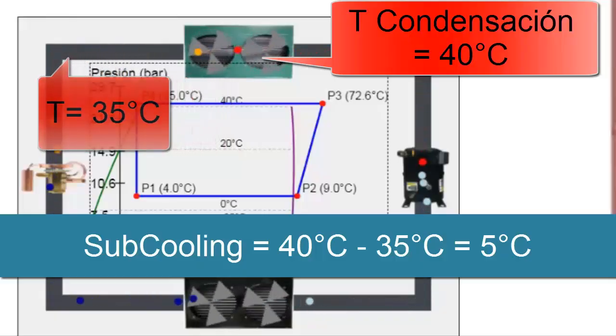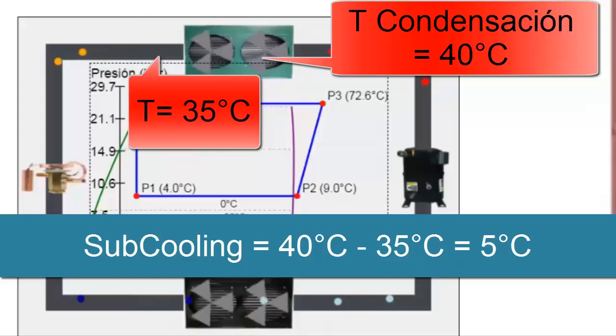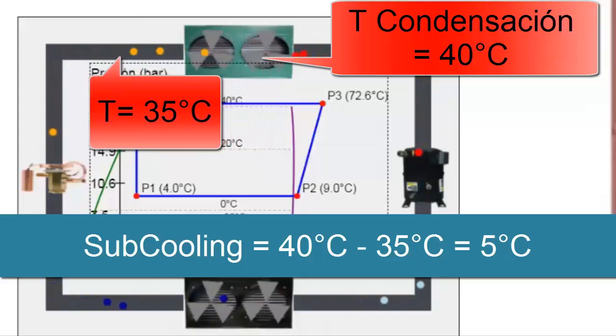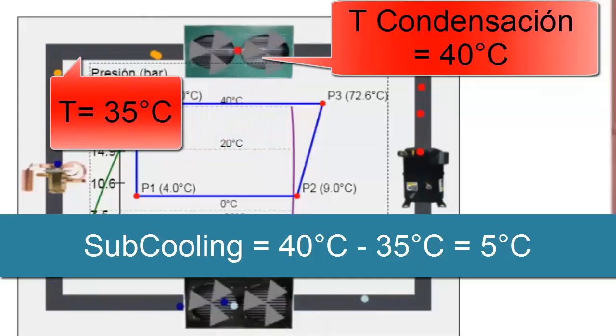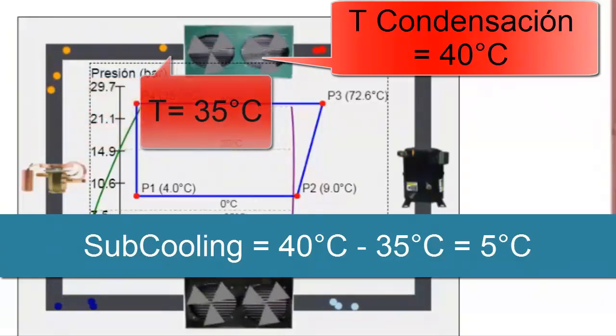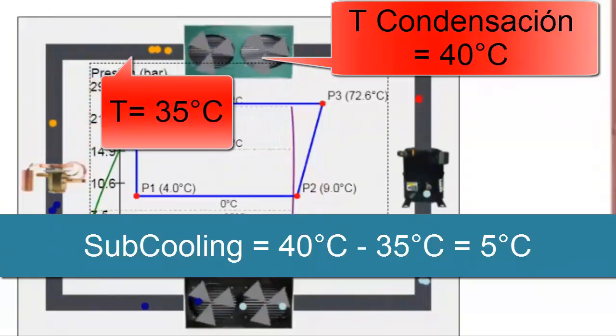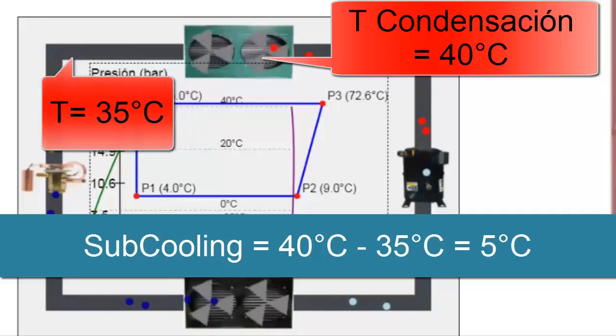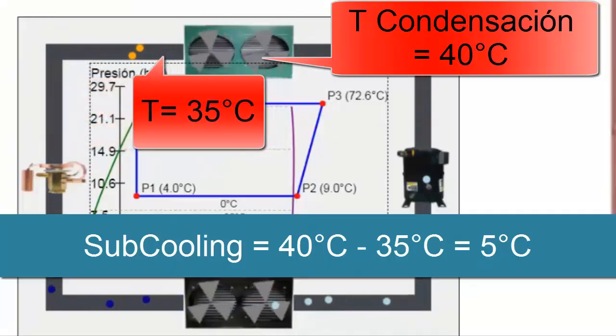However, it is important to note that in hot climates or under adverse thermal exchange conditions in the condenser, such as low fan speed or external dirt on the condenser coil, the sub-cooling may be less than 5 degrees Celsius, even dropping to 0 degrees Celsius.